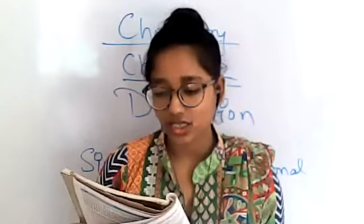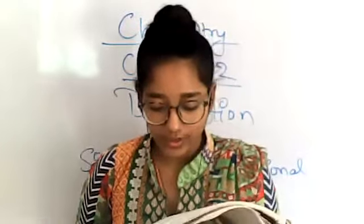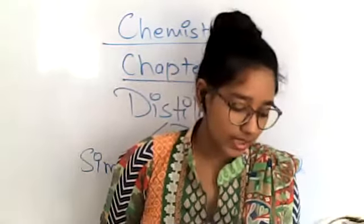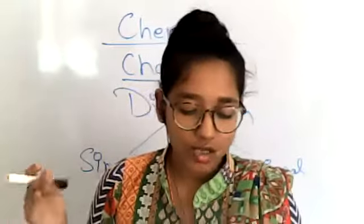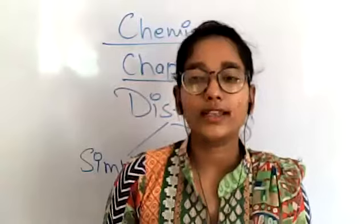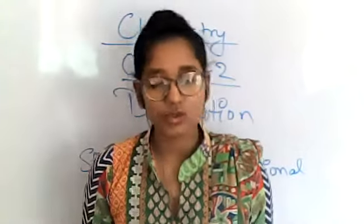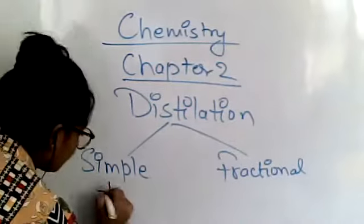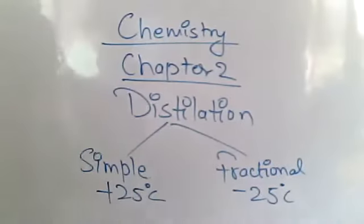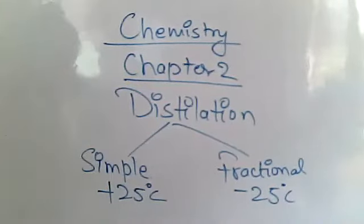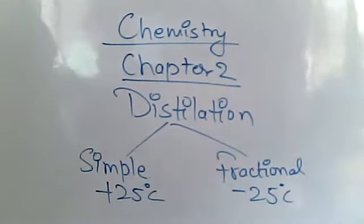Now we will see the fractional distillation method. It is used to separate a mixture of two or more miscible liquids for which the difference in boiling point is less than 25 degrees Celsius. So simple distillation applies when the difference is more than 25 degrees Celsius, and fractional distillation when it is less than 25 degrees Celsius.